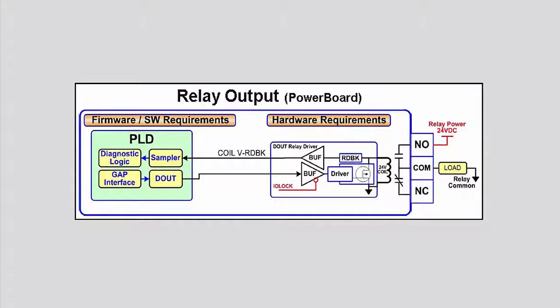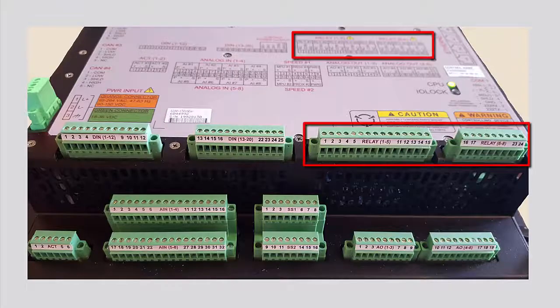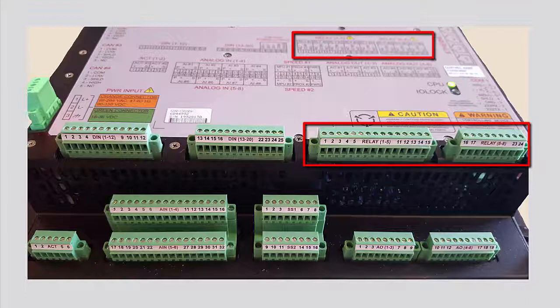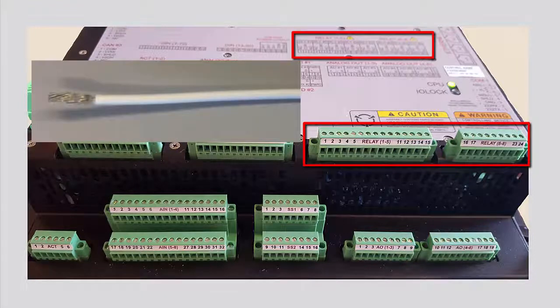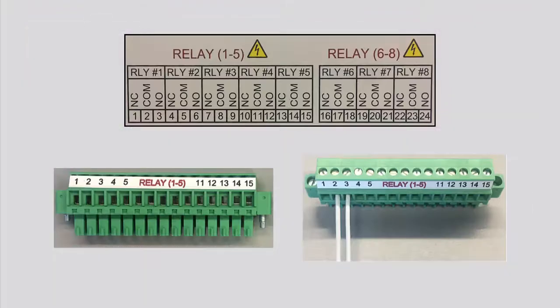Discrete or relay outputs on the controller are isolated and use form C relay outputs with normally open NO, normally closed NC, and common COM contacts. Each individual relay is separated into a numbered block containing the contact labels and corresponding terminal block numbers. To wire a relay output, use a 16 gauge wire.